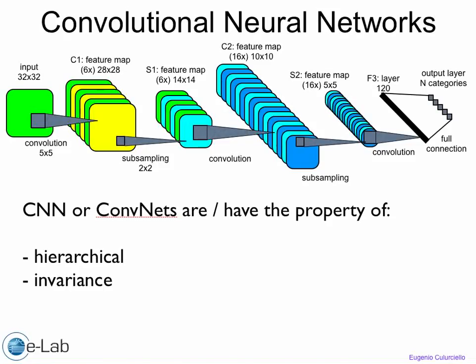I will now describe very briefly the property that makes convolutional neural networks really effective in terms of recognizing things in an image. Convolutional neural networks have two main properties that are extremely important, as you can see by reading Jan LeCun's paper from 1998.